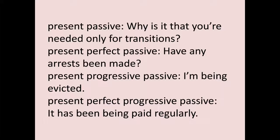Switching off perfect and switching on progressive: 'I'm being evicted.' Both progressive and passive use 'be' as their auxiliary, so you'll see two forms of be: 'am' and then 'being.' The lexical verb 'evicted' is in the past participle form. When both perfect and progressive are switched on along with passive: 'It has been being paid regularly.' You have 'have' for perfect, two forms of 'be' for progressive and passive, and the past participle lexical verb.